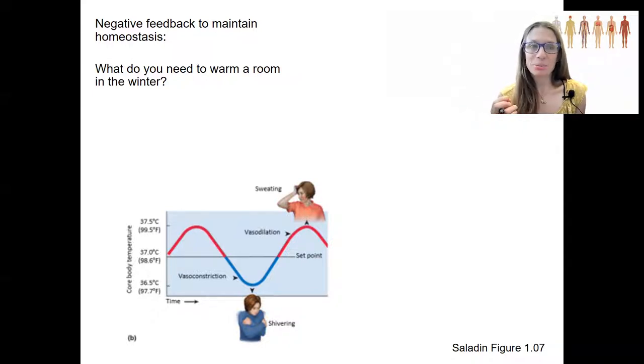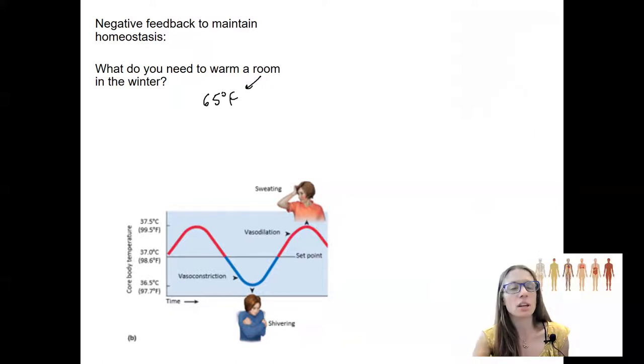This is actually an example of negative feedback to maintain homeostasis. Let's say that you want your room to be like 65 degrees Fahrenheit. How would you design a system to keep your room at 65 degrees? So assume it's cold and you need to warm it up. I'm going to draw this. This is an example of something you should be drawing along with me.